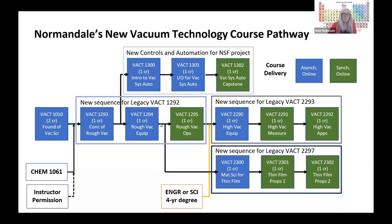This sequence of three courses is about the simplest regime of vacuum system, which is rough vacuum. We have the concepts course, the equipment course, and the operations course. Over here, we have a series of three related to high vacuum — we have the equipment, the measurement, and then applications. High vacuum equipment is more sophisticated and creates a lower pressure regime. This course also touches on ultra-high vacuums.